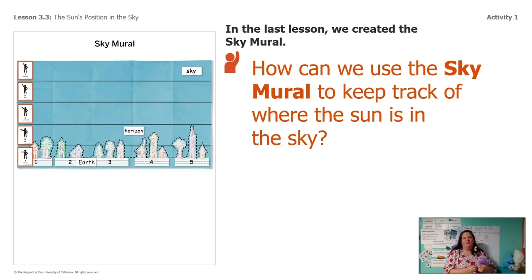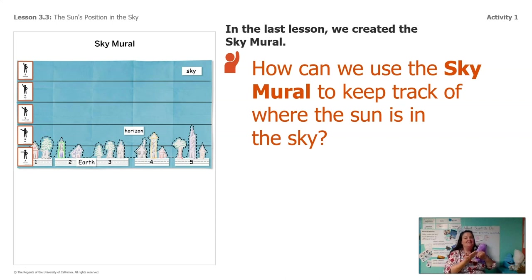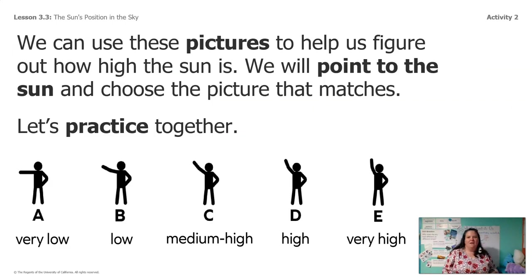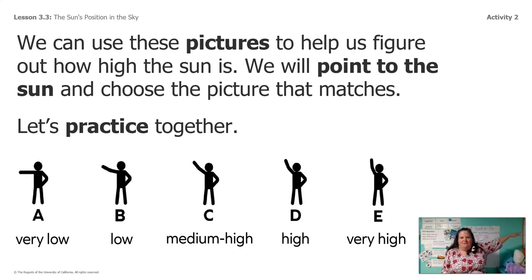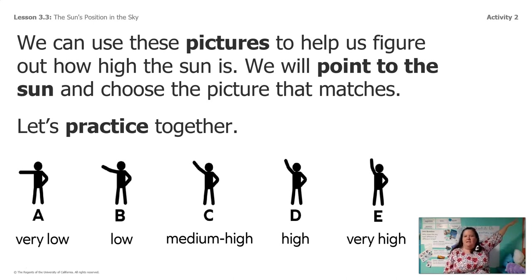You guys remember that last time we created this sky mural. So can you tell me some ideas for how we could use the sky mural to keep track of where the Sun is in the sky? You'll notice the Sun is missing from our sky mural, so we're going to add it. We'll use these pictures to help us point to where the Sun is. We have: very low, low, medium, high, and very high. Will you guys practice these with me — very low, low, medium, high, and very high.